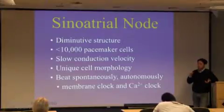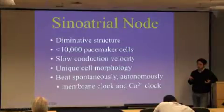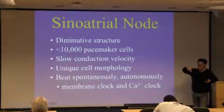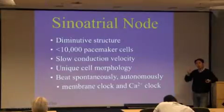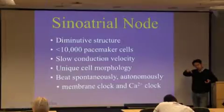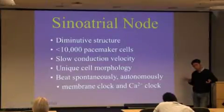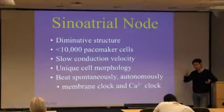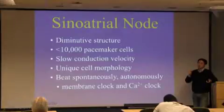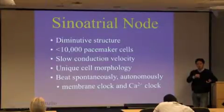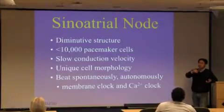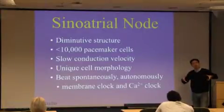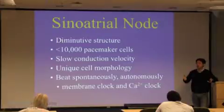The pacemaker cells in the center of the SA node have slow conduction velocity — much slower than what you see in the atrial or ventricular myocardium. This is the source-sink mismatch problem: how can the SA node, less than 10,000 cells, pace the huge electrical sink of the atrial and ventricular myocardium? That source-sink mismatch can be overcome by slow conduction velocity, which is protective of the sinoatrial node from the highly hyperpolarizing electrical influence of the atrial myocardium.